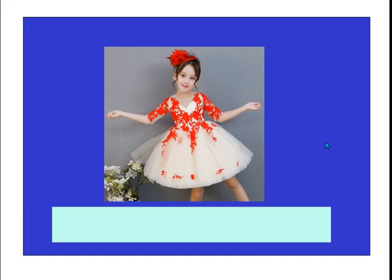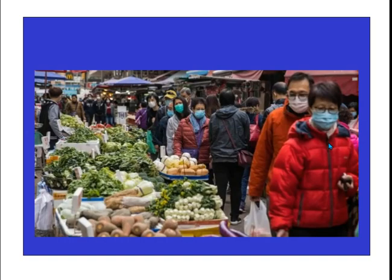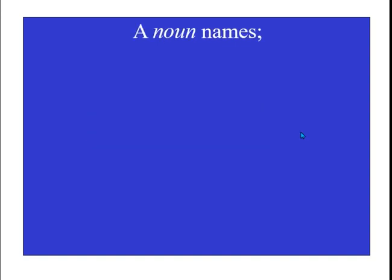How about this? How many things can you see? We can call her Sally, and she's wearing a beautiful dress. She has flowers there also. This is like a place where you buy and sell something — it's a market. Do you love this place? It's a playground.